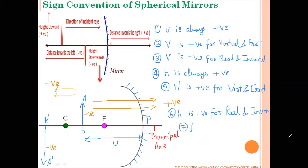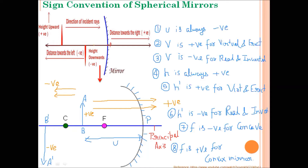Focal length depends upon the nature of the mirror. Focal length of a concave mirror is to the left of the mirror, so it is taken as negative. Focal length of a convex mirror is to the right of the mirror, so it is taken as positive according to new Cartesian sign conventions. These are the sets of rules we apply when solving numerical problems.